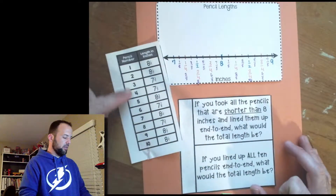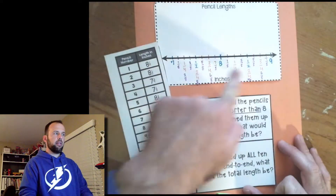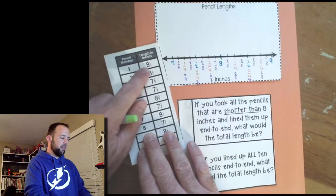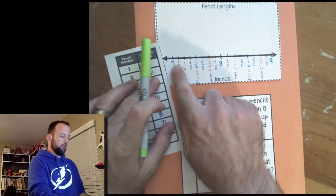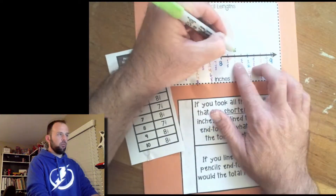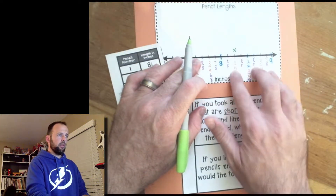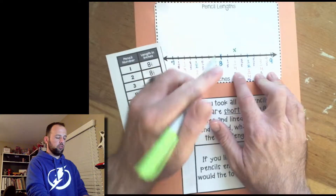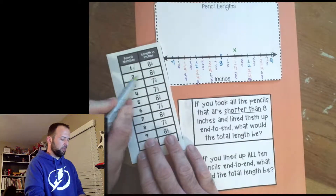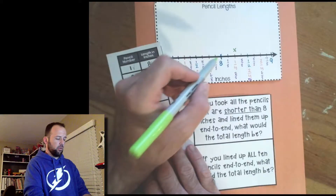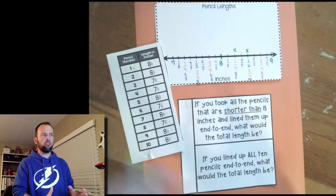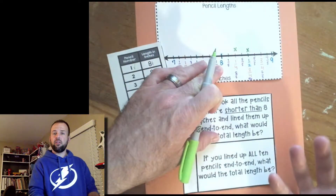Now I'm going to start plotting the pencil lengths onto my line plot. Pencil number one measures eight and a quarter inches, so I'll put an X right over eight and one-quarter. Pencil number two is eight and one-half, so I put an X there for eight and a half. So far we're just putting an X for every pencil length that we have.